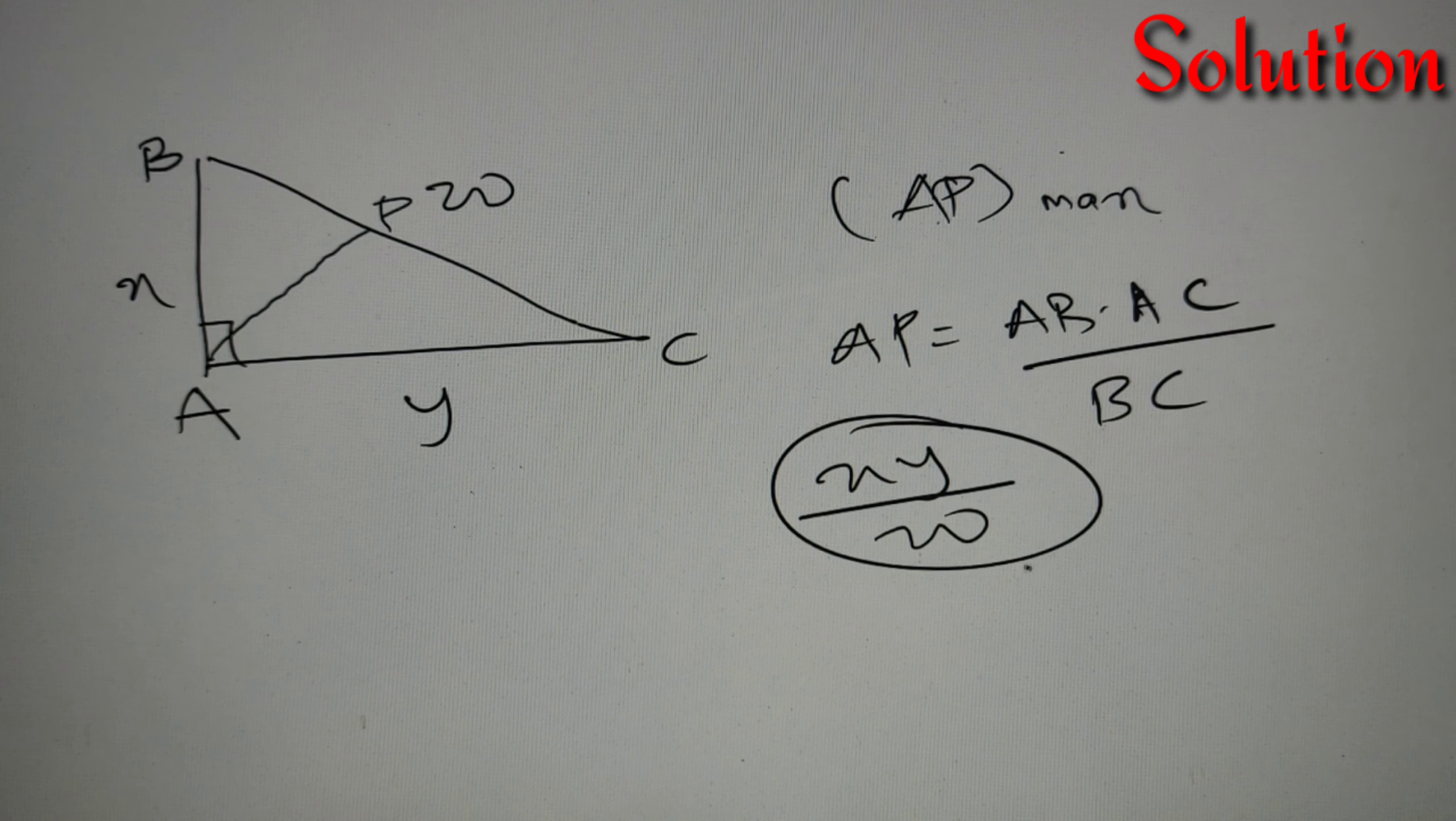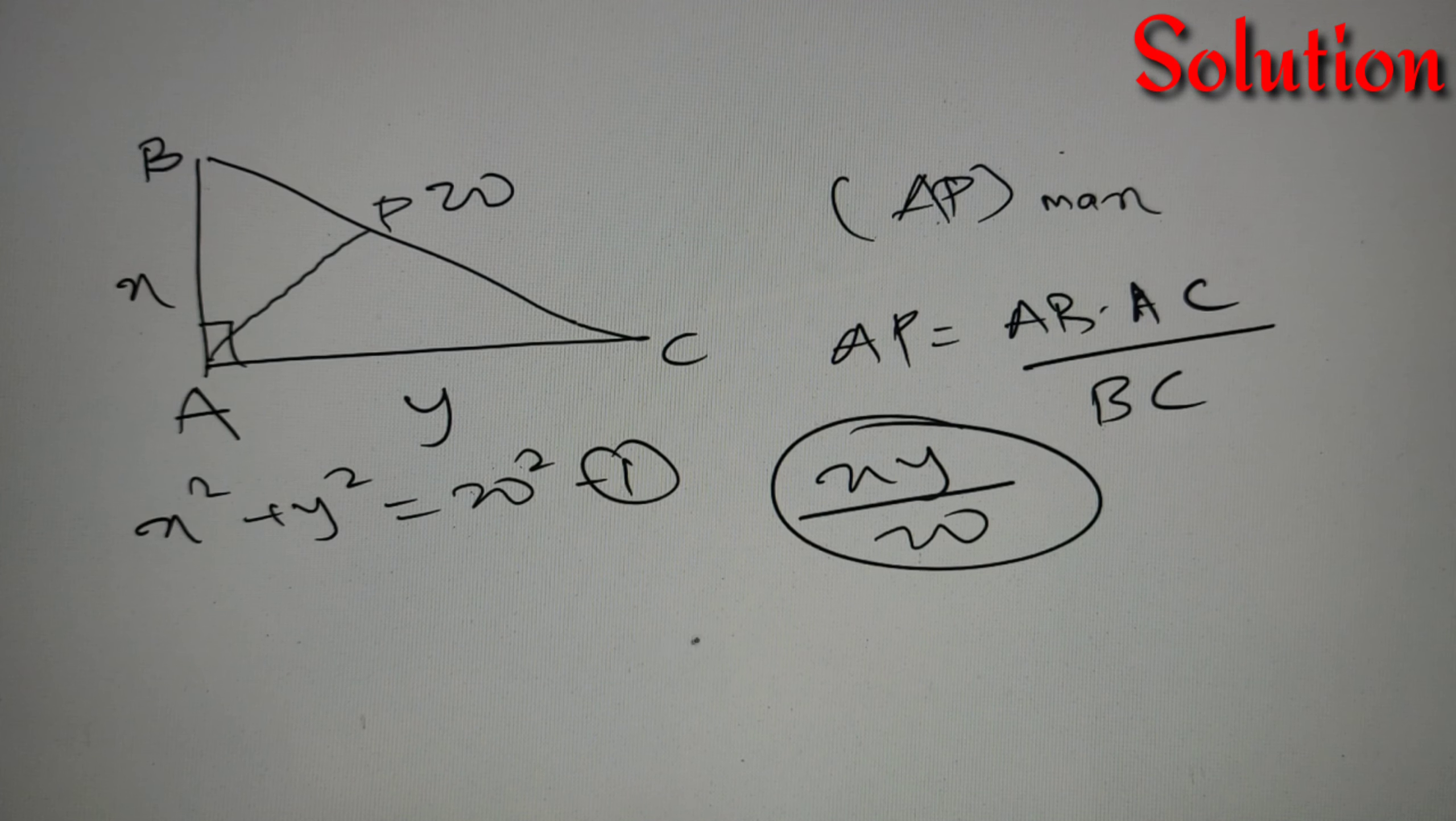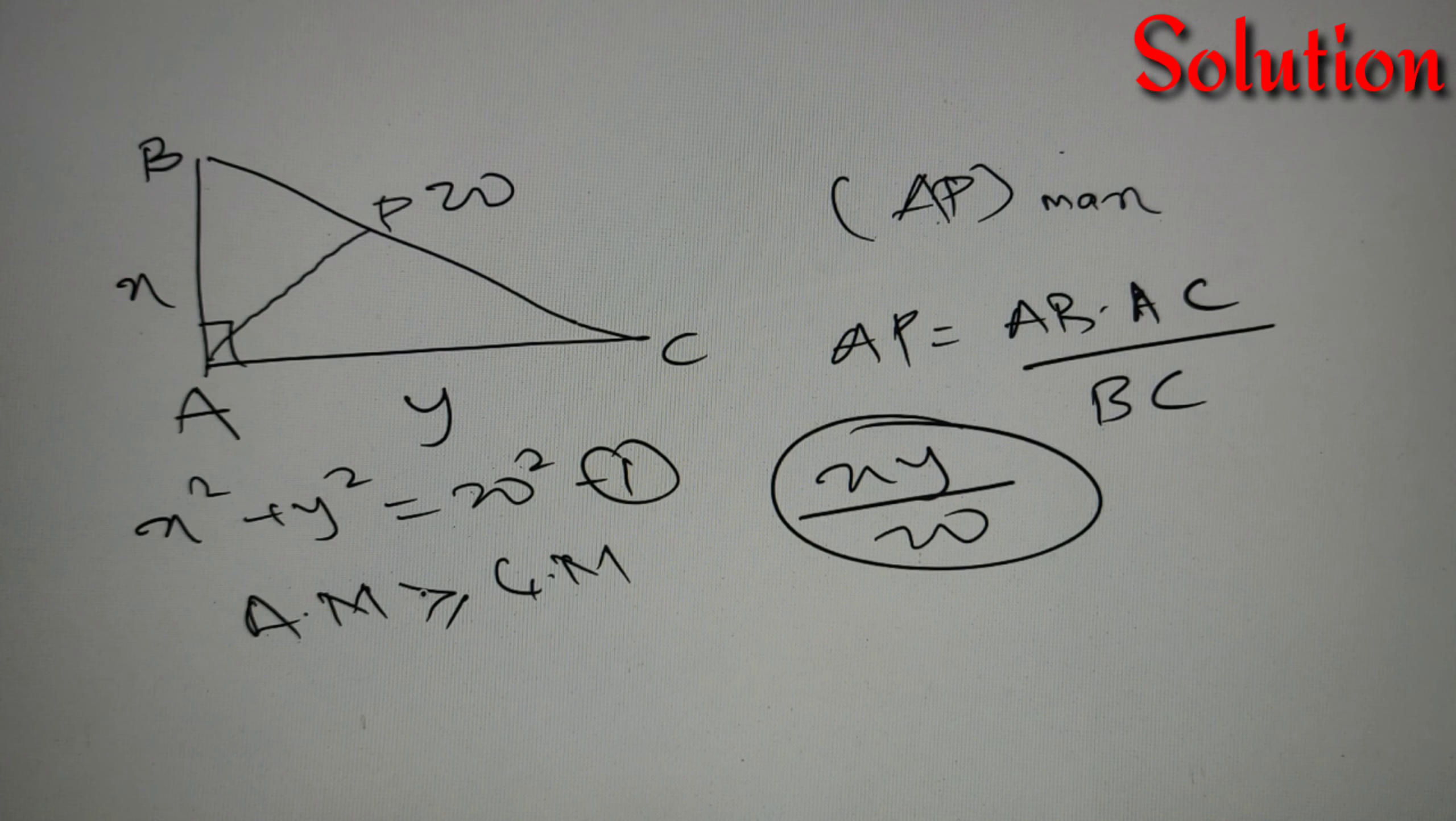The first equation we'll use is the Pythagoras theorem: base square plus perpendicular square equals hypotenuse square for a right-angled triangle, so we'll have X² + Y² = 20² = 400. The second equation is that arithmetic mean is always greater than or equal to geometric mean. We'll take the arithmetic mean of X and Y, so (X + Y)/2 is always greater than or equal to √(XY).